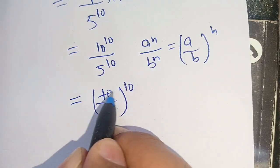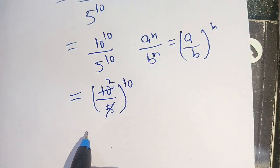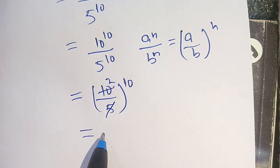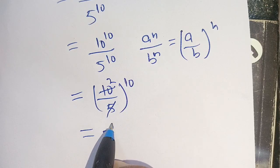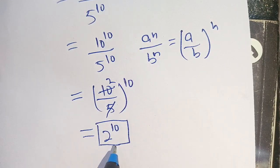Since 5 times 2 equals 10, it becomes 2 raised to power 10, which is the required value.